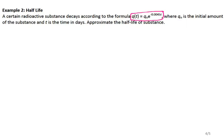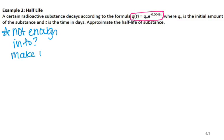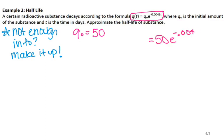What is half-life? Half-life is the amount of time it takes for a particular substance to reach half of its original value. Now, all I've been given is the formula — no initial amount, final amount, or time. So when that's the case and we don't have enough info, we make it up. Since I don't have an initial value, I'll go with 50. So I have 50 times e to the negative 0.0045T.